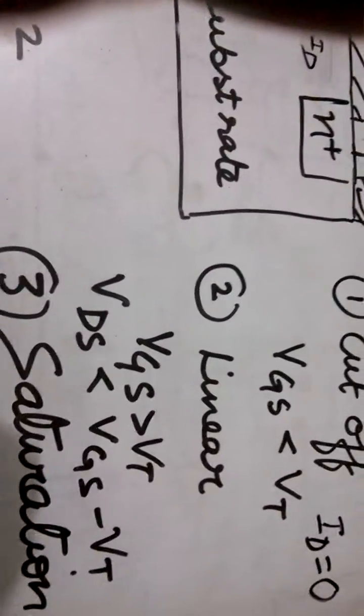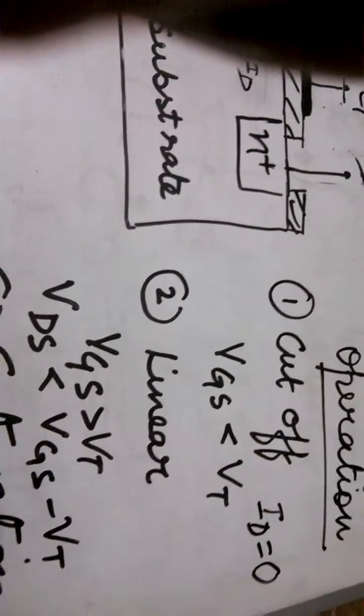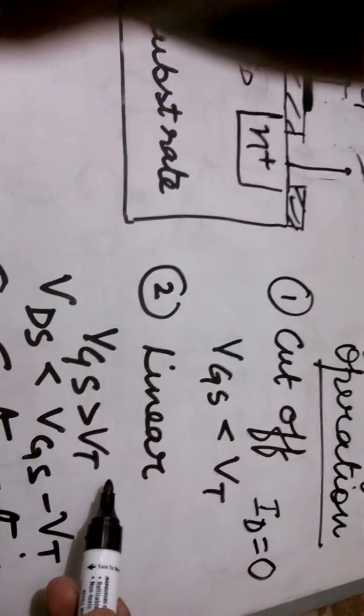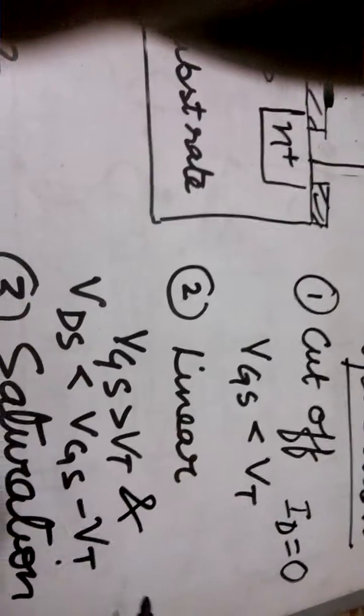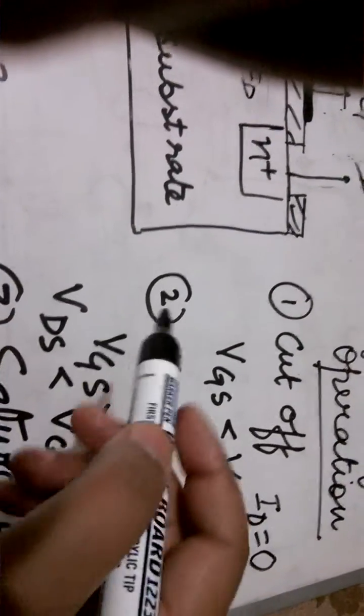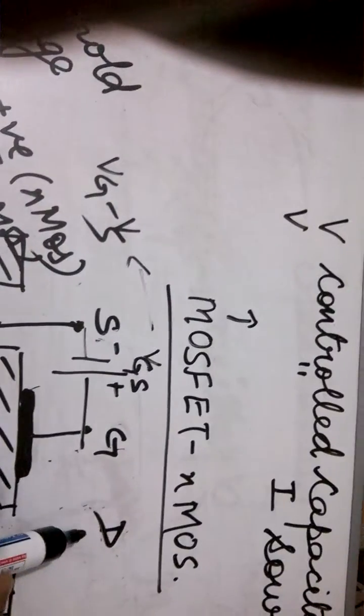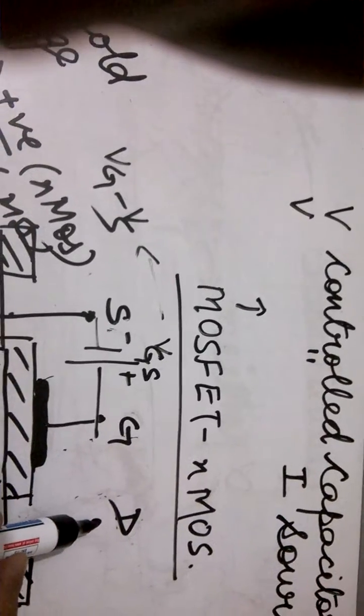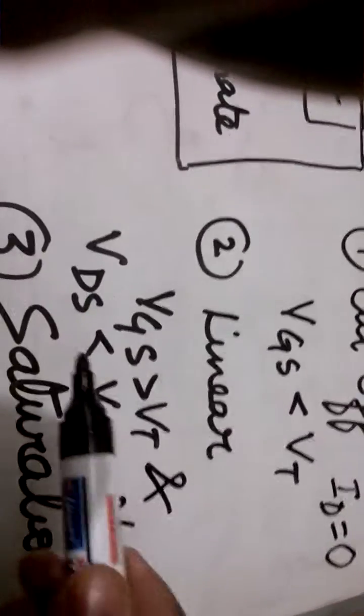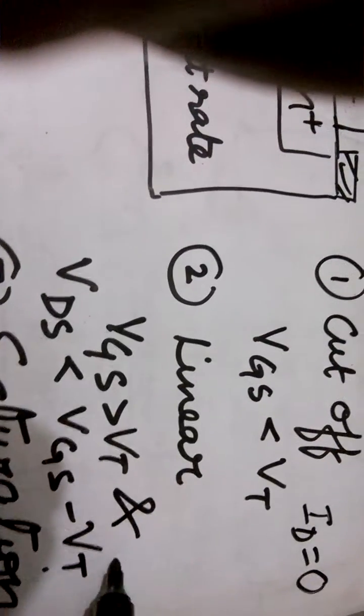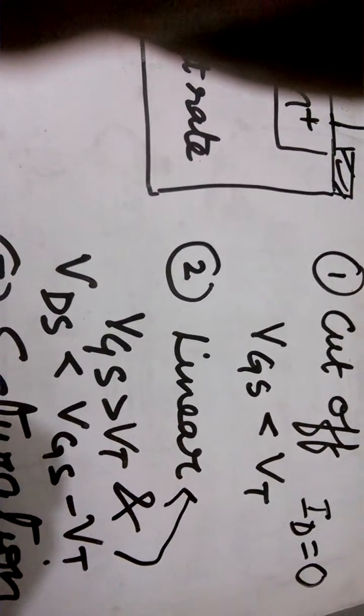Next is the linear region of operation. When our VGS is greater than VT and the second condition which is to be fulfilled is that the VDS. Now what is VDS? VDS is the VD that is drain voltage minus the source voltage. If VDS is less than VGS minus VT then the device will be operating in the linear region.